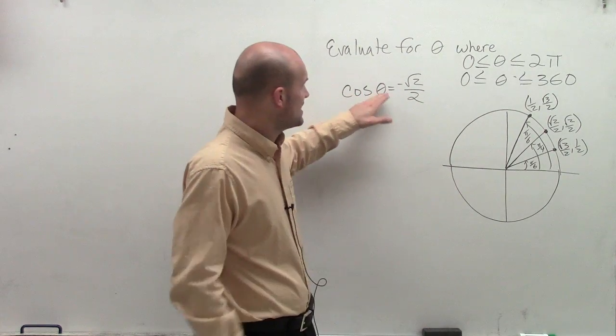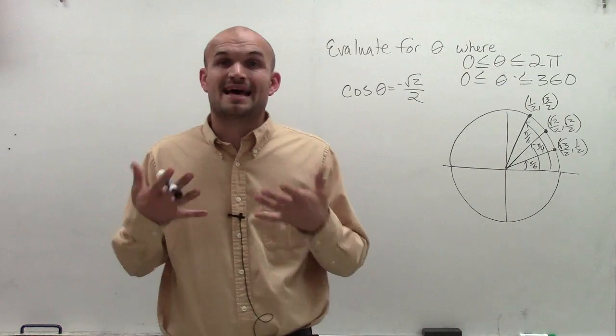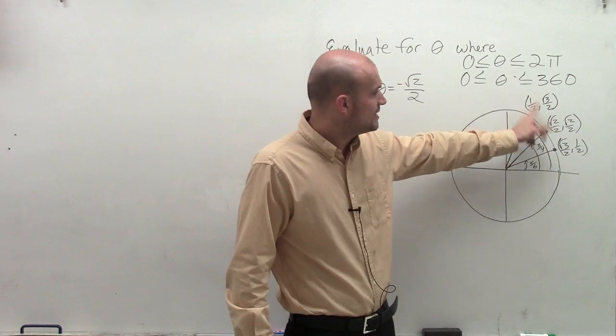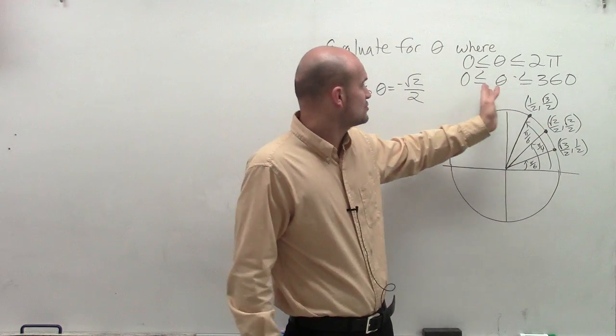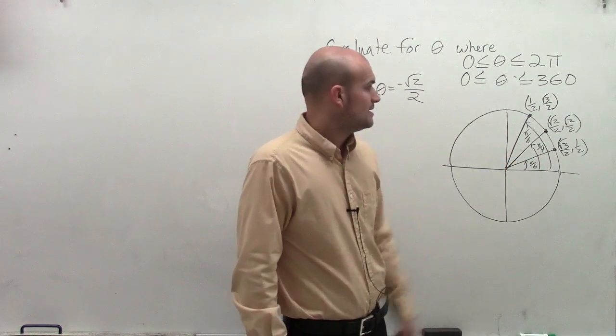So I'm looking at cosine of theta equals negative square root of 2 divided by 2. Now, remember, cosine represents the x value. So when I look over here, I notice that the x value, the only time my x value is equal to square root of 2 over 2 is at my angle of pi fourths.